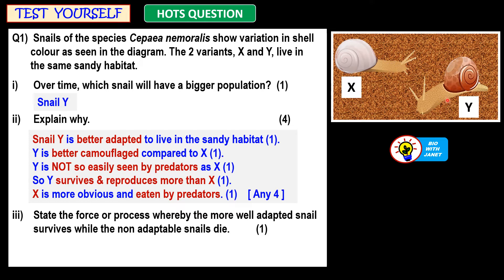Snail Y is better adapted to live in the sandy brown habitat as it also has a brown shell, so it is better camouflaged compared to X. Camouflage is the ability to blend in with the surroundings by matching the colours or patterns of the surroundings. Y has a brown shell like its habitat, whereas X has a white shell which is in greater contrast to the brown sandy habitat. So Y is not so easily seen by predators because it is better camouflaged, meaning it will not be eaten and it survives and reproduces more than X.